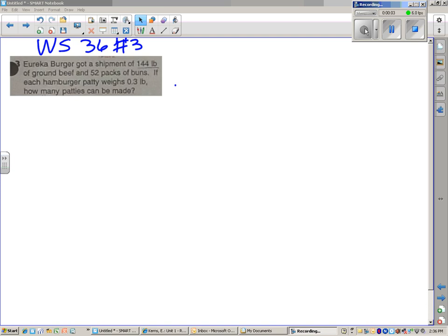Eureka Burger got a shipment of 144 pounds of ground beef and 52 packs of buns. If each hamburger patty weighs 0.3 pounds, how many patties can be made?